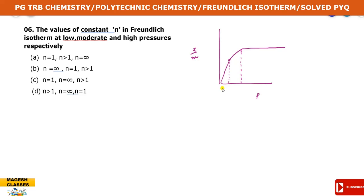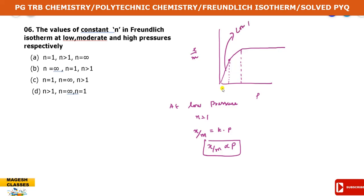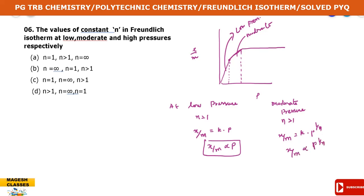At low pressure, n is equal to 1. So x by m equals k into p power 1 by 1, which is k into p. That is, x by m is directly proportional to pressure. At moderate pressure, n is greater than 1, so x by m equals k into p power 1 by n - the increase is slow and slightly increasing. At high pressure, x by m is independent of pressure, so x by m equals k into p power 0.